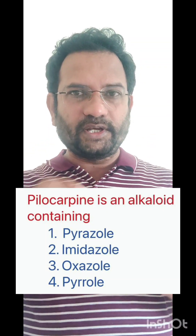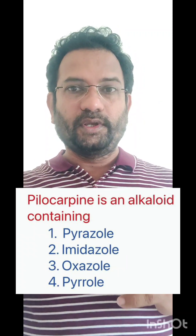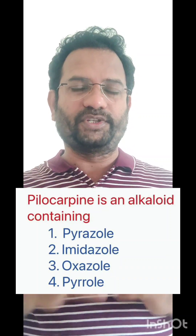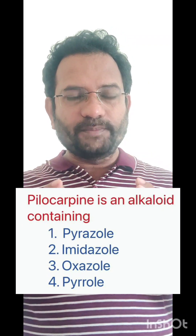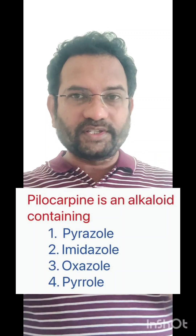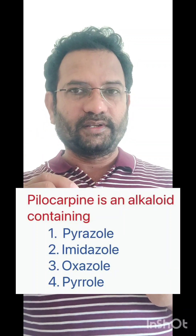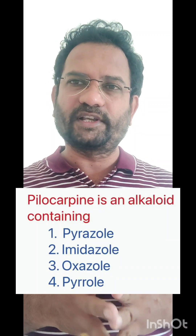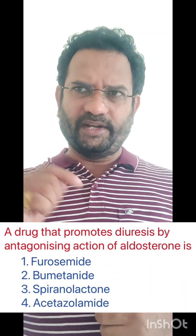Pyrazole has two nitrogens in a five-membered ring at the 1,2-position. Imidazole has two nitrogens in a five-membered ring at the 1,3-position. Oxazole has two heteroatoms in a five-membered ring — oxygen and nitrogen — that's why 'oxa' and 'az' are there. Pyrrole is a five-membered ring with one nitrogen. This covers the heterocyclic chemistry question. Now the next question: a drug that promotes diuresis by antagonizing the action of aldosterone.